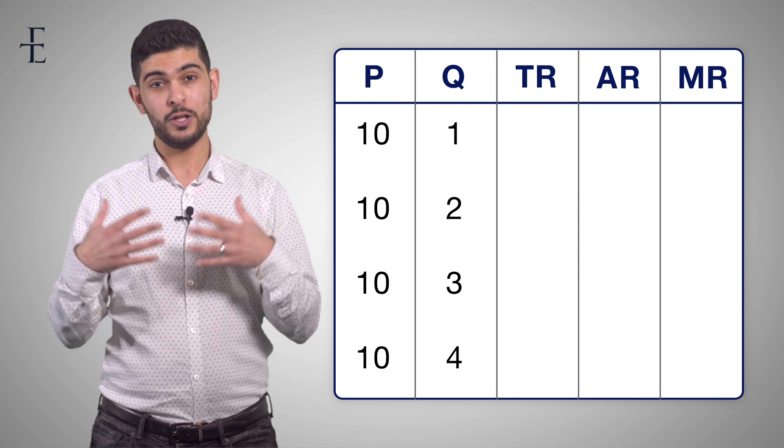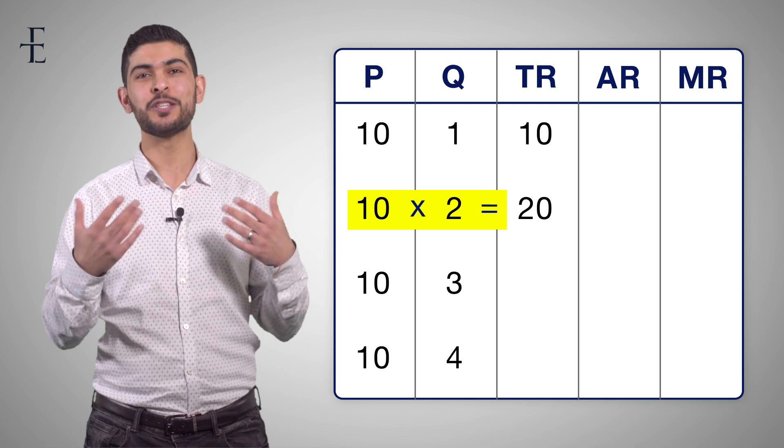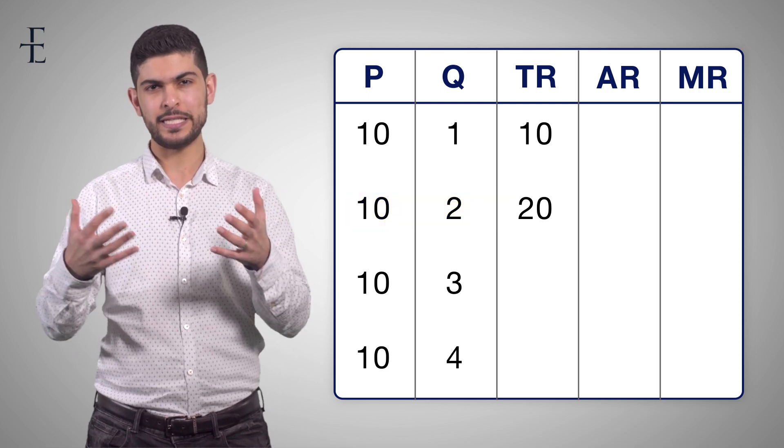Let's fill out the column for total revenue first. Well, 10 times 1, 10. 10 times 2, 20. And so on and so forth. 10, 20, 30, 40.